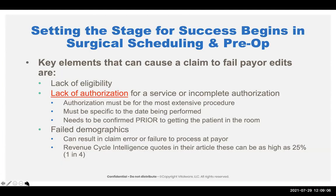Let's start with surgery scheduling. The number one cause, according to Red Cycle Intelligence, is about 25% failed demographics. HFMA has varied on this number, but in an exam question it stated that up to 40% of claims have to be reworked because the demographics are wrong. That's because people change insurance quite a bit. If they change insurance and your authorization was with the prior insurance, you have to start over with eligibility and authorization. So surgery scheduling now becomes the first control point to make sure eligibility is current.